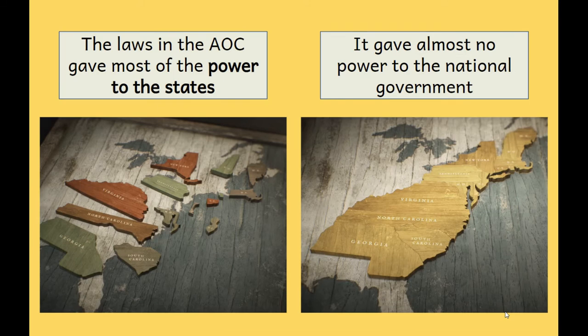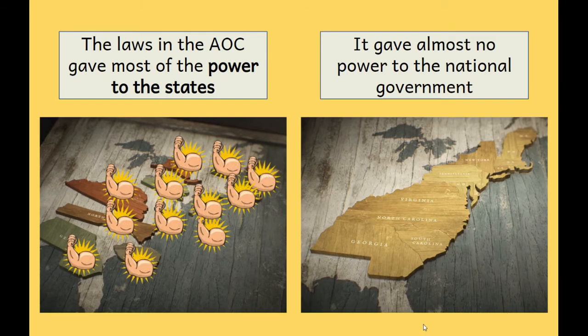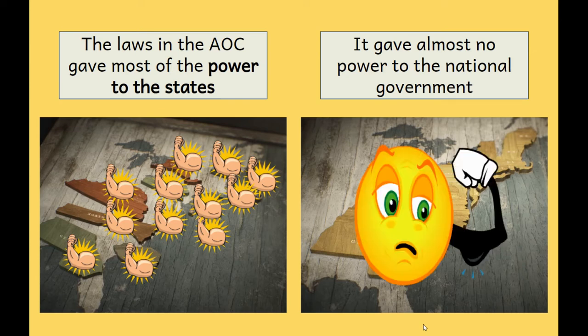The laws in the Articles of Confederation gave most of the power to the states. Each individual state had its own power and strength. So the states were all very strong in making their own laws, their own taxes, their own leaders and governors. The national government — the government for the whole country — was very, very weak. It gave almost no power to the national or entire country's government.